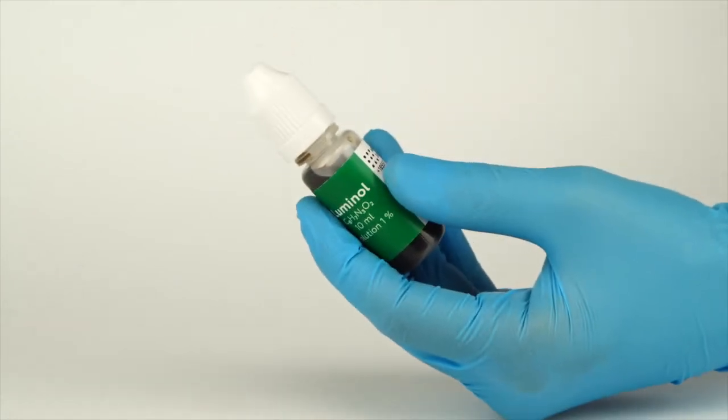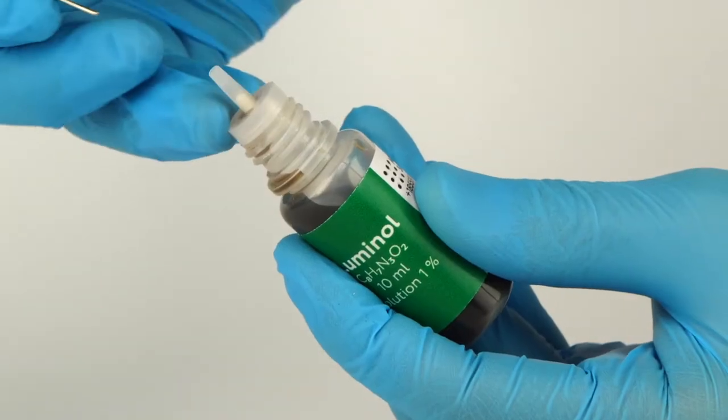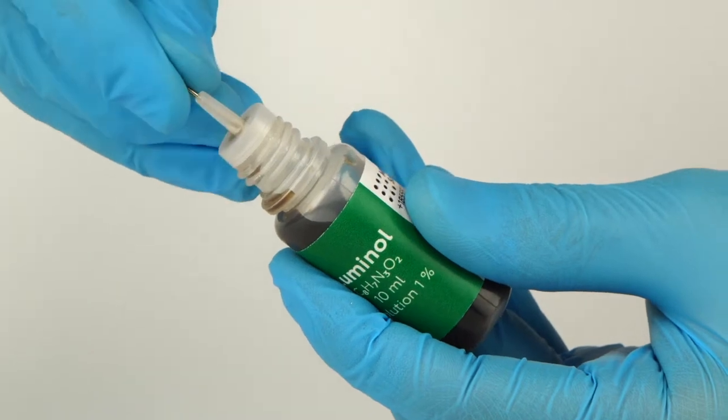To open a bottle containing a reagent, push the cap down and turn it. Carefully pierce the bottle nozzle using an unbent paper clip.